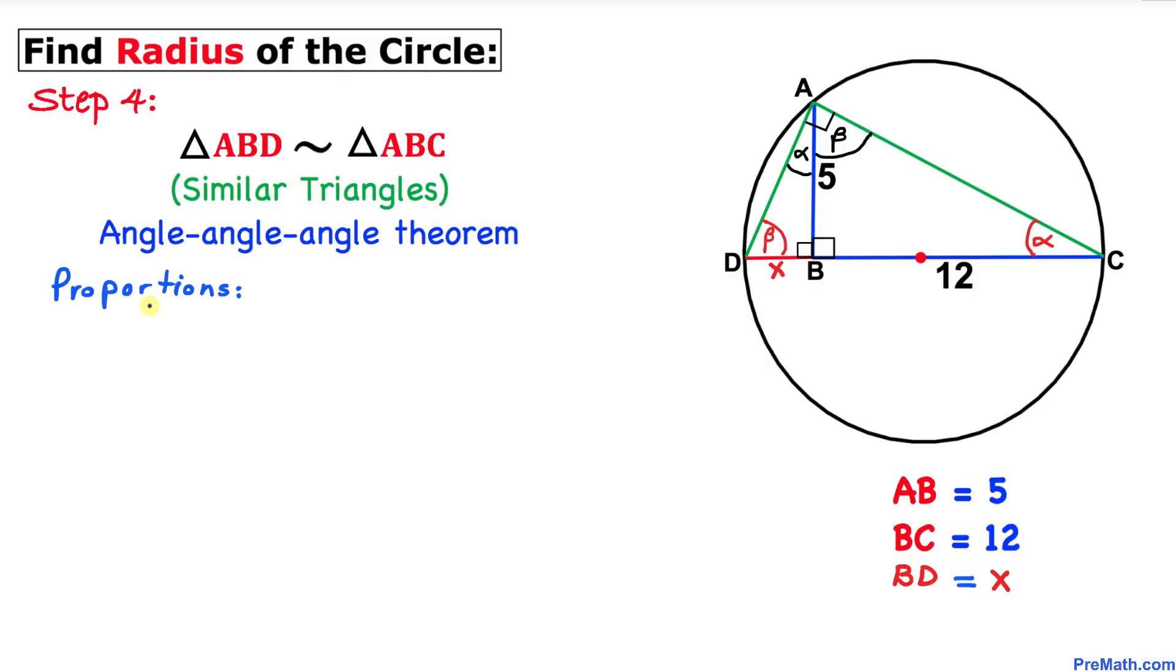Therefore we have the proportions. Let's equate these ratios: the first ratio is X divided by 5 equals 5 over 12. Now let's solve for X. Multiply by 5 on both sides, so we get X equals 25 over 12. Let me call this equation number 1.